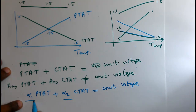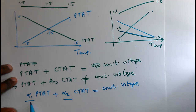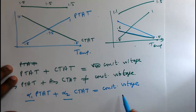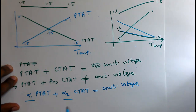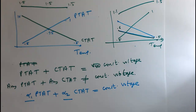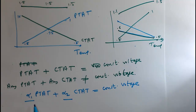We will adjust alpha1 and alpha2 so that when we add alpha1 × PTAT plus alpha2 × CTAT, we will get a constant voltage. We will adjust these two curves by adjusting alpha1 and alpha2. How we will do it in a circuit, that we will discuss later. But this is the core idea of the band gap reference — we will make a CTAT using a circuit, and a PTAT using a circuit, then add the weighted voltages.